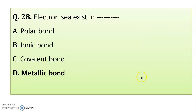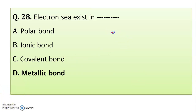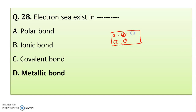Electron sea exists in — we have seen this in metallic bonding. In metallic bonding, there are positive kernels surrounded by a sea or cloud of electrons. This electron sea is present in the metallic bond — not in polar, ionic, or covalent bonds. Correct option: electron sea exists in metallic bond.